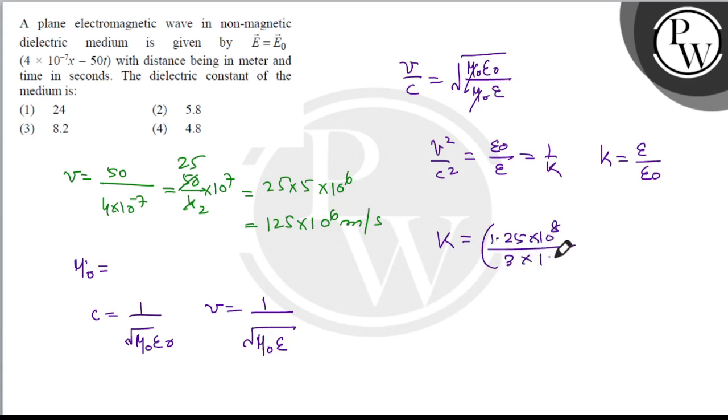Calculating this: 3 divided by 1.25 equals 2.4, and squaring gives us the dielectric constant.